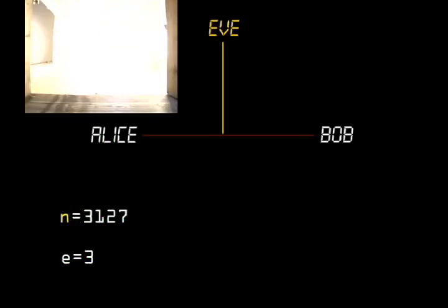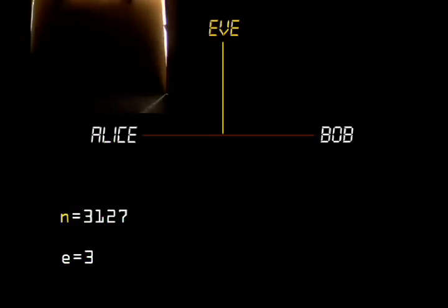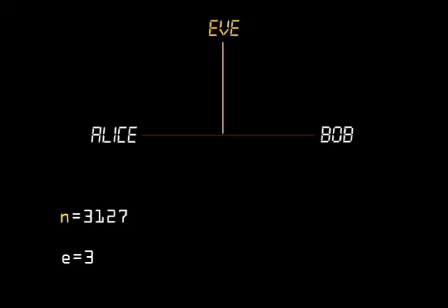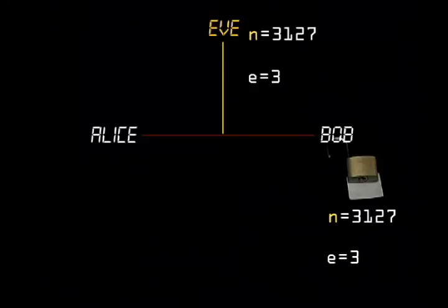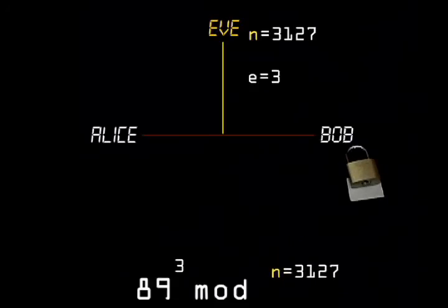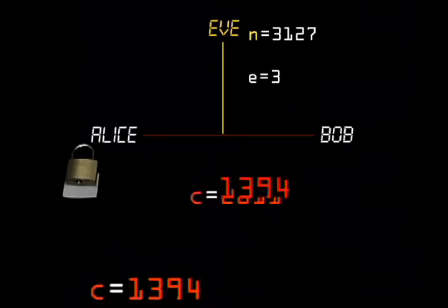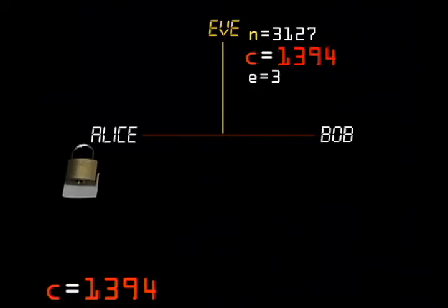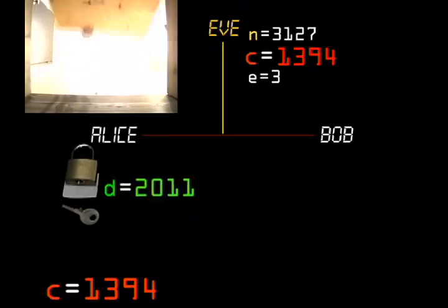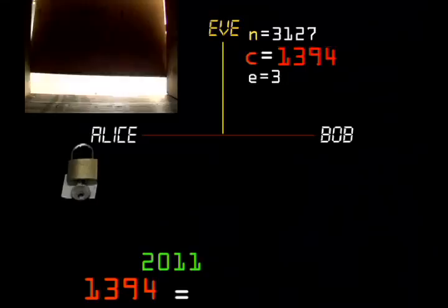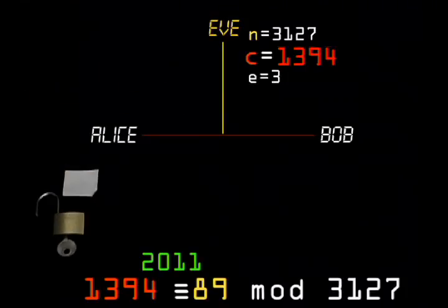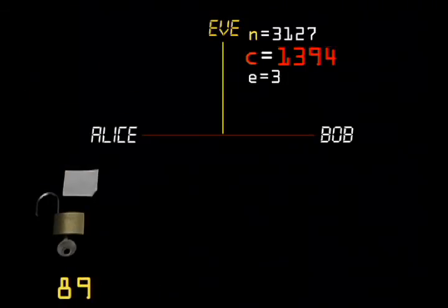Now, she hides everything except the value of n and e, because n and e make up her public key. Think of it as an open lock. She sends this to Bob to lock his message with. Bob locks his message by calculating m to the power of e mod n. Call this c, his encrypted message, which he sends back to Alice. Finally, Alice decrypts his message using her private key, d, accessed through her trap door. C to the power of d mod n equals Bob's original message m.